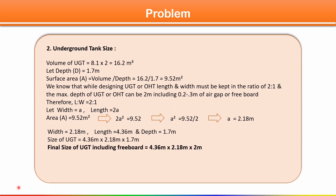Including freeboard of 0.3 meters, the final size of underground tank is: length = 4.36 m, width = 2.18 m, total depth = 2.0 m. This is how we find the capacity and size of both the overhead tank and underground tank. I hope you enjoyed the session — see you in the next one.